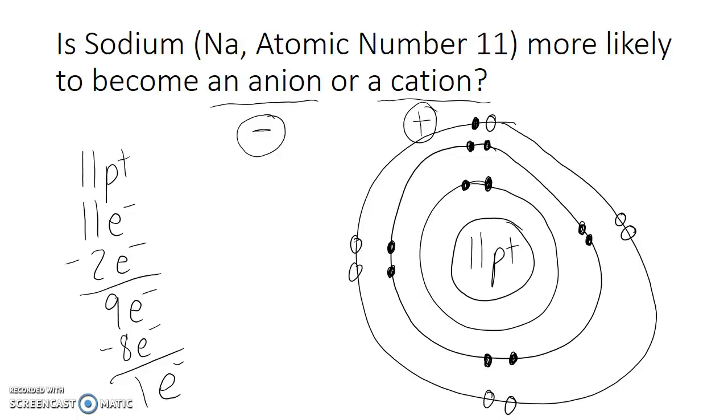Now, there's no way for sodium to make seven covalent bonds or somehow gain seven electrons to become stable. But if sodium could just get rid of that one electron in that outermost electron shell, well, then suddenly it would be stable. It would be filled. So that's exactly what sodium wants to do. Sodium wants to get rid of one of its electrons.